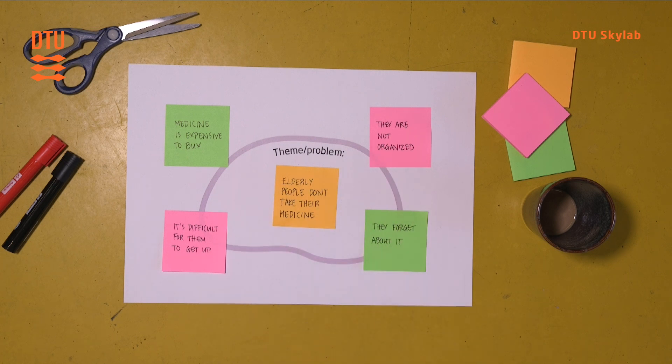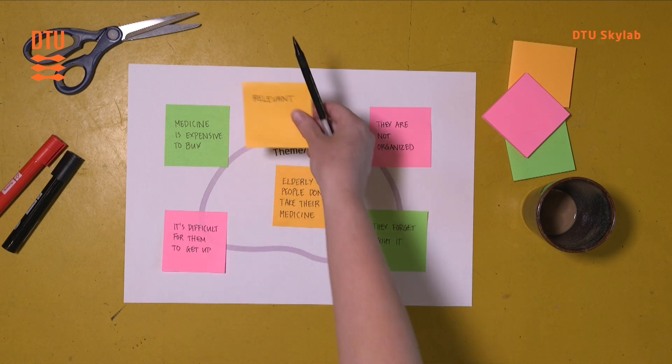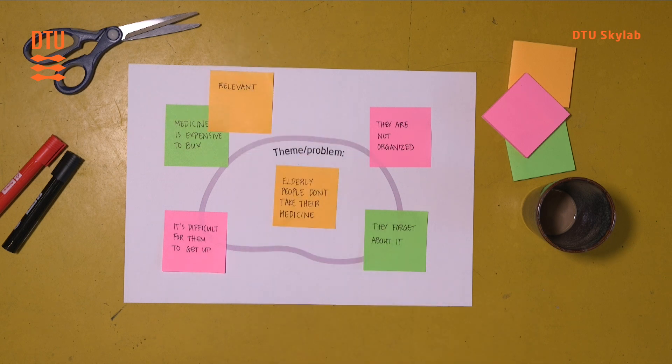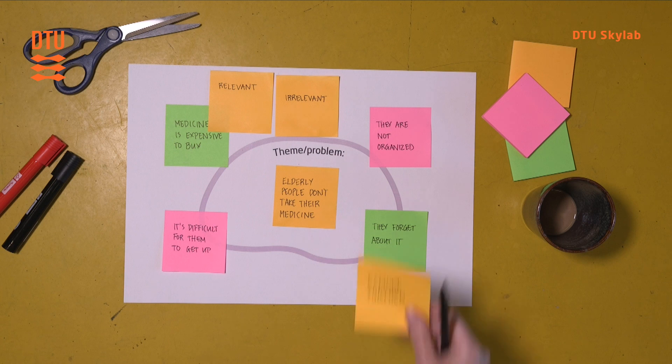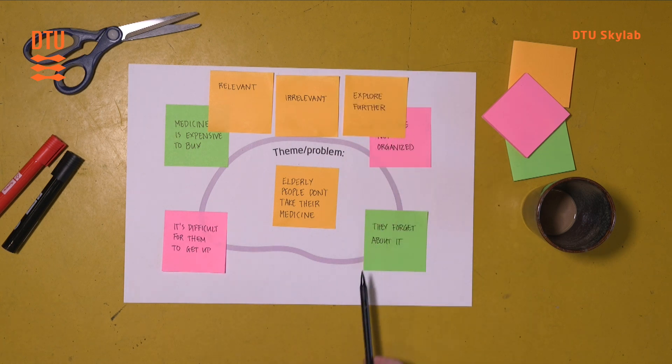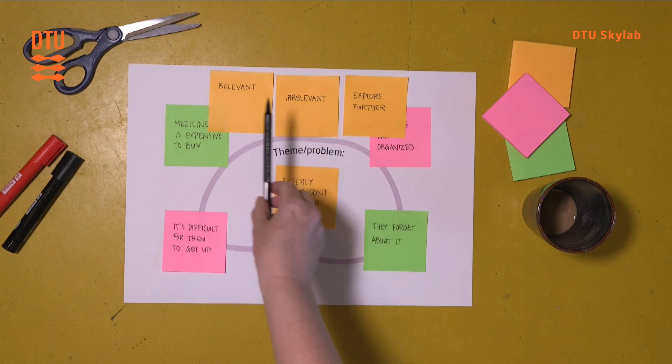Once you've done the second round, you create categories so that you can analyze the assumptions and categorize them, for instance, into relevant assumptions, irrelevant to the theme you're working on, or you might want to explore them further. So some might be here, but ultimately you want to be able to categorize them, move them from this category to either irrelevant or relevant.